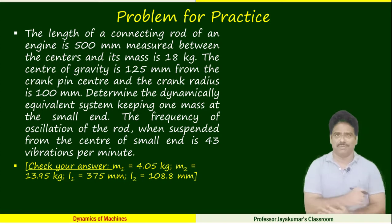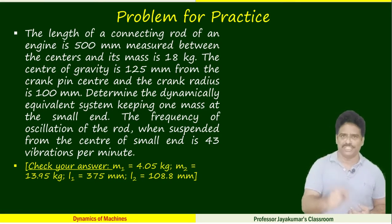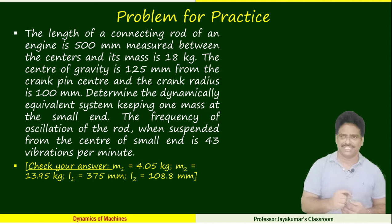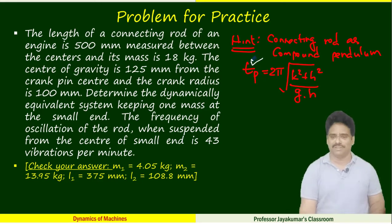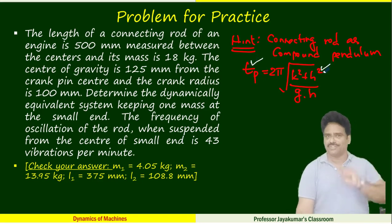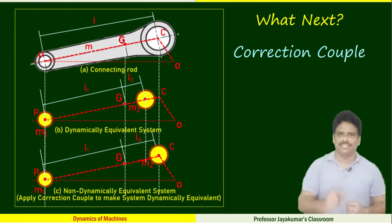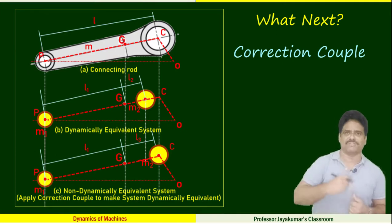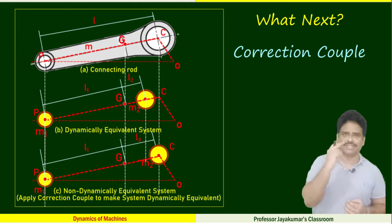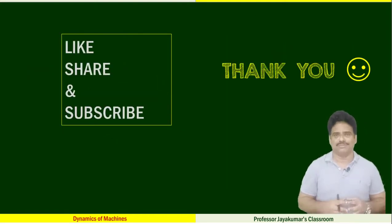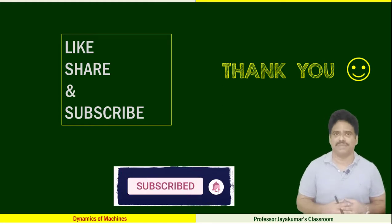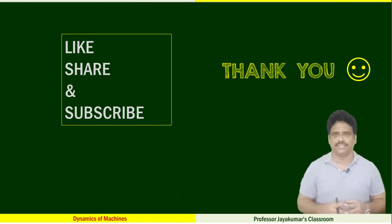As always, I have given a practice problem for you to try at home. In this problem, the radius of gyration is not given directly — instead, the time period is given. The hint is: from the time period and the distance h from the point of oscillation to the center of gravity, you can find k. In our next video, we are going to extend this concept to an important topic called Correction Couple. Hope you understood the concept clearly. Please like the video, share it with your friends, and subscribe to my channel. See you in the next video. Take care. Bye.